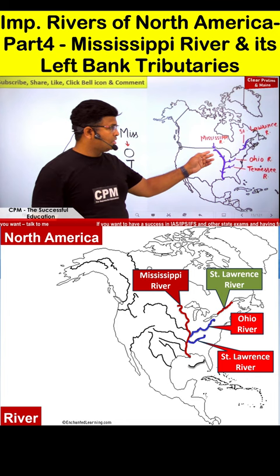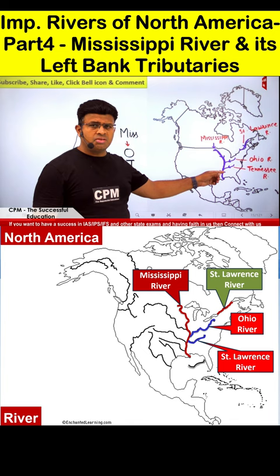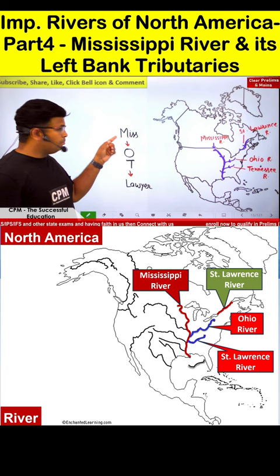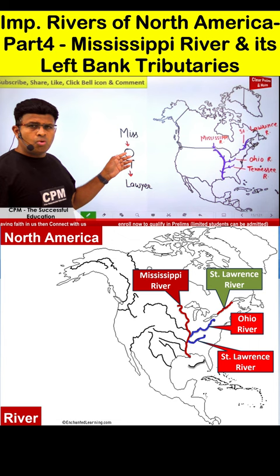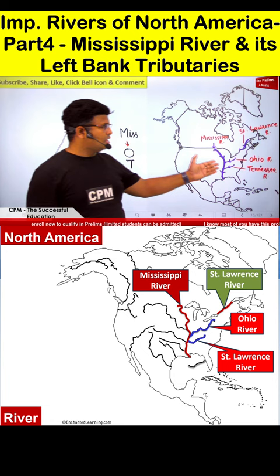The Mississippi River is draining, and its left bank tributaries are Ohio and Tennessee. To remember this, I use the mnemonic: Miss is watching OT platform — Miss for Mississippi River, OT for Ohio and Tennessee.